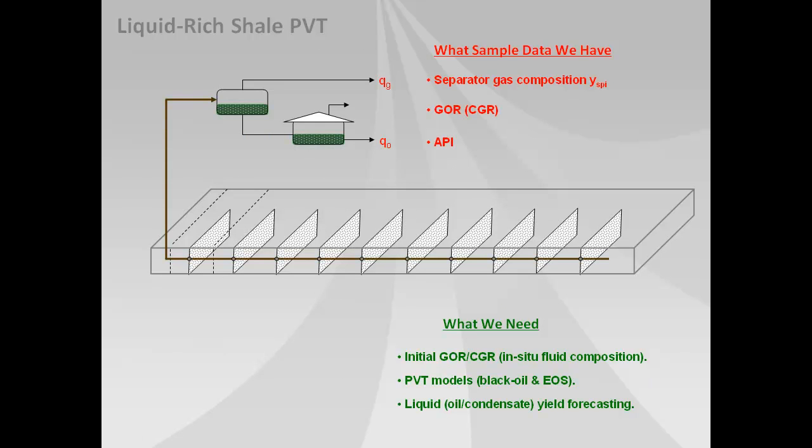This is a schematic of a liquid-rich shale PVT situation. We have a horizontal well with multiple fractures along the well. We're producing both gas and oil or condensate at the surface and in general the type of PVT data that pretty much any such well would have includes, based on the production data, the gas oil ratio at the time of sampling and or the condensate gas ratio.